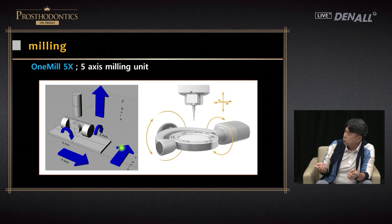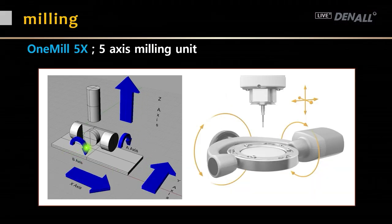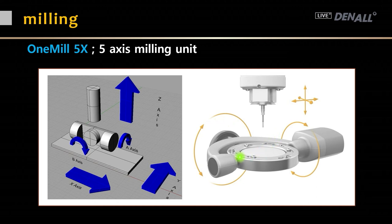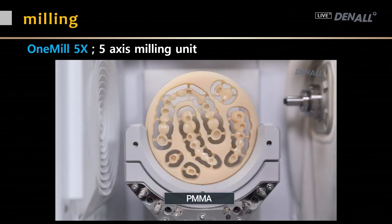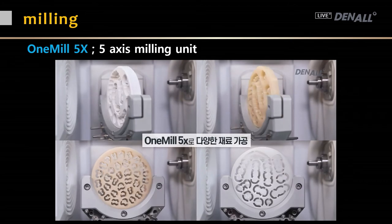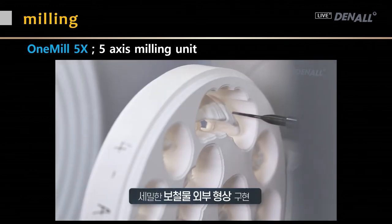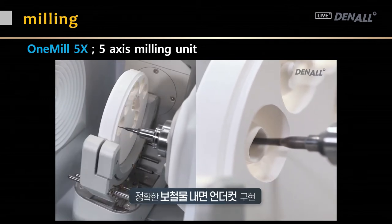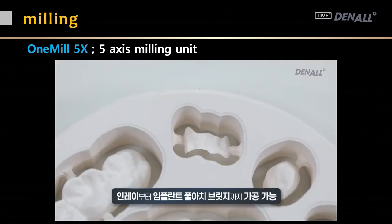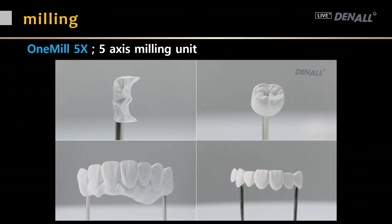Five-axis milling: x, y, z, plus B-axis turning clockwise and counterclockwise, and A-axis turning back and forth. The drill moves in x, y, and z direction while the holder turns back and forth and clockwise and counterclockwise. In Austin's five-axis unit advertisement, the disc turns left to right and back and forth. Precise prostheses can be fabricated, and inside undercuts can be achieved. Layered crown bridge and hybrid prosthesis, as well as zirconia, can be fabricated.